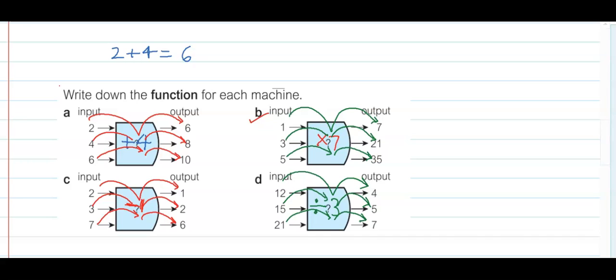Do we understand now how a function machine works? We have an input value. Then in the middle there is a function which gives a command, and then performance — the output — is there. Now, next question.